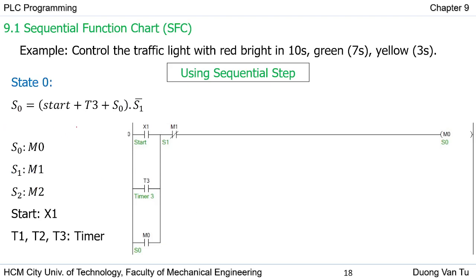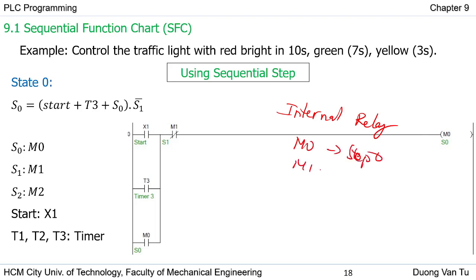We can use the conceptual design and apply it in the GX Work tool software to build the control program. In practice, when constructing the control program, we can use the internal relay. I use M0 for step zero, M1 for step one, and M2 for step two. We use internal relays because they are internal memory and do not affect any physical input or output, so we can use them freely. Internal relay memory is very useful for expressing the state of the control process.